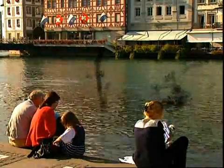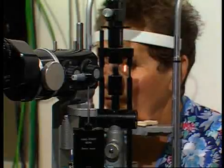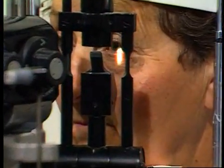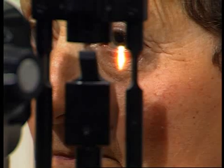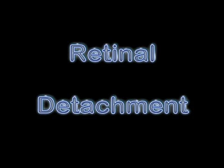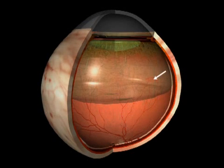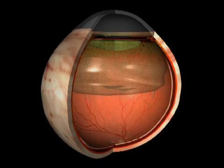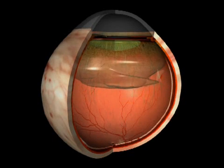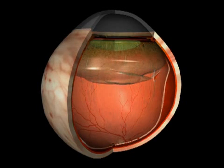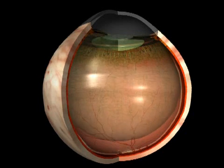Because vitreous detachment can also lead to a retinal detachment, the patient should submit to a retinal exam to assure the absence of danger. If there is a strong adhesion between the retina and the vitreous, the posterior vitreous detachment can cause traction on the retina. If the retina itself is fragile at that particular point, this can lead to a retinal tear, which will allow intraocular fluids to pass through and detach the retina.